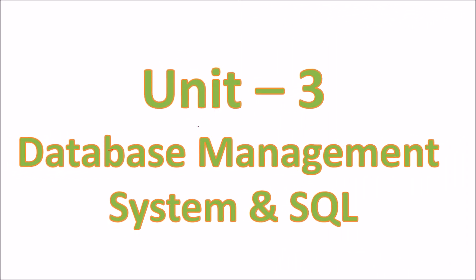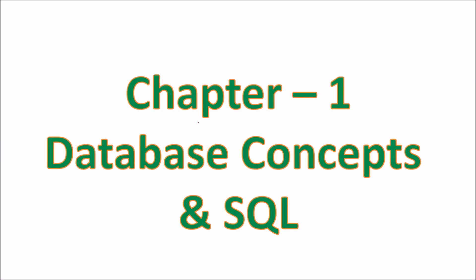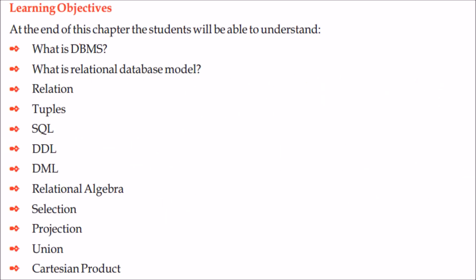We are looking at Unit 3: Database Management System and SQL, Chapter 1: Database Concepts and SQL. We will learn about DBMS, understand the relational database model, what relation tuples are, what SQL is — including DDL and DML — and the relational algebra used to deal with relations, such as selection, projection, union, and Cartesian product.